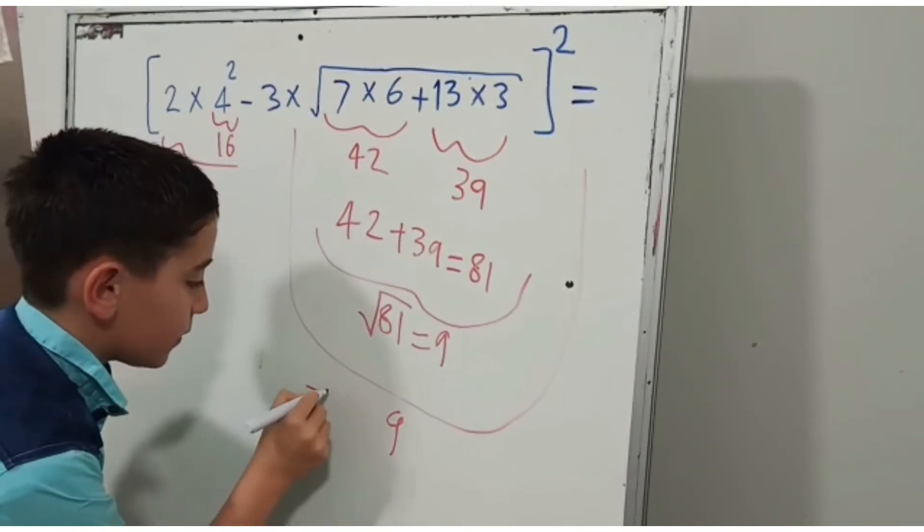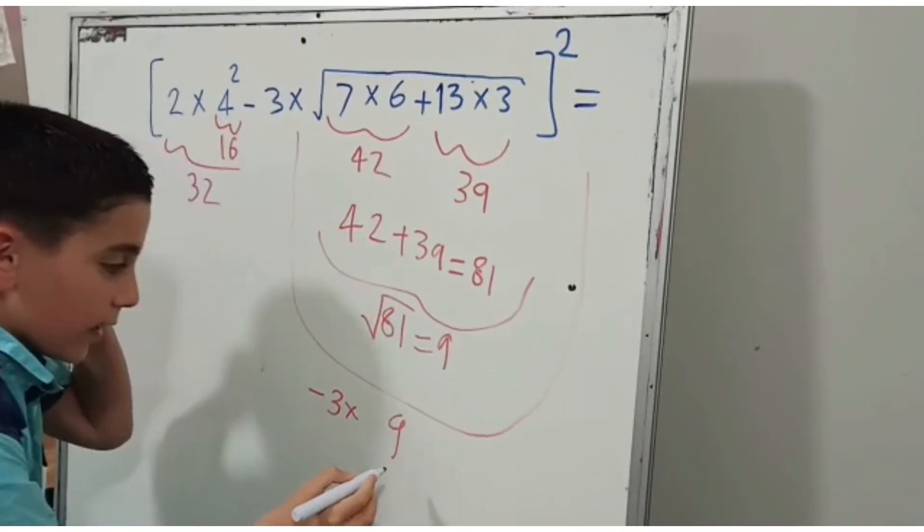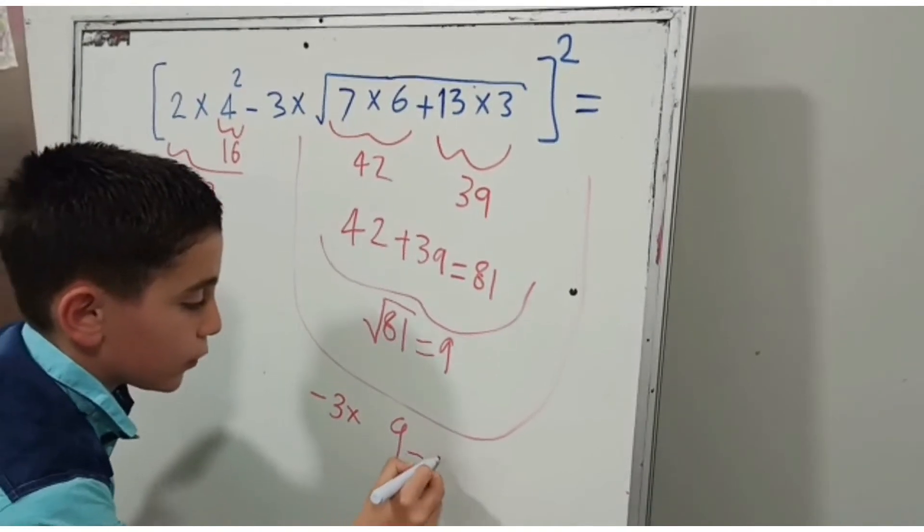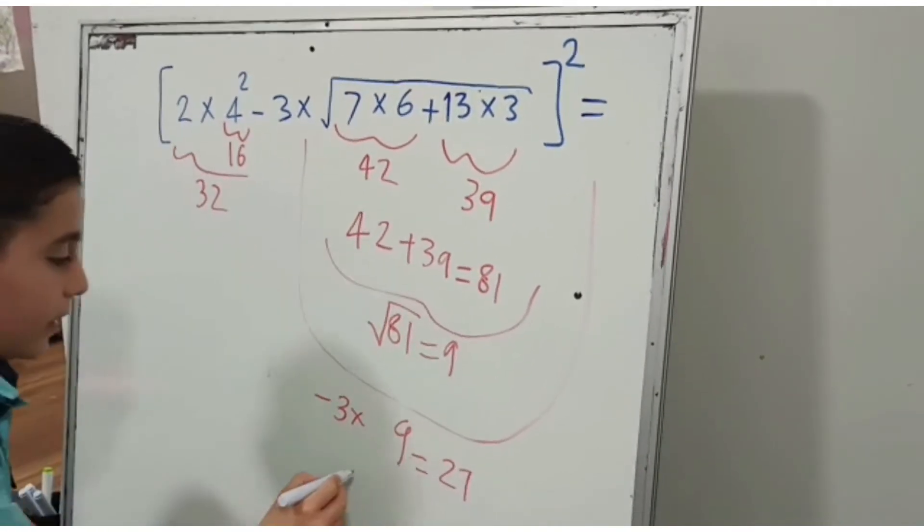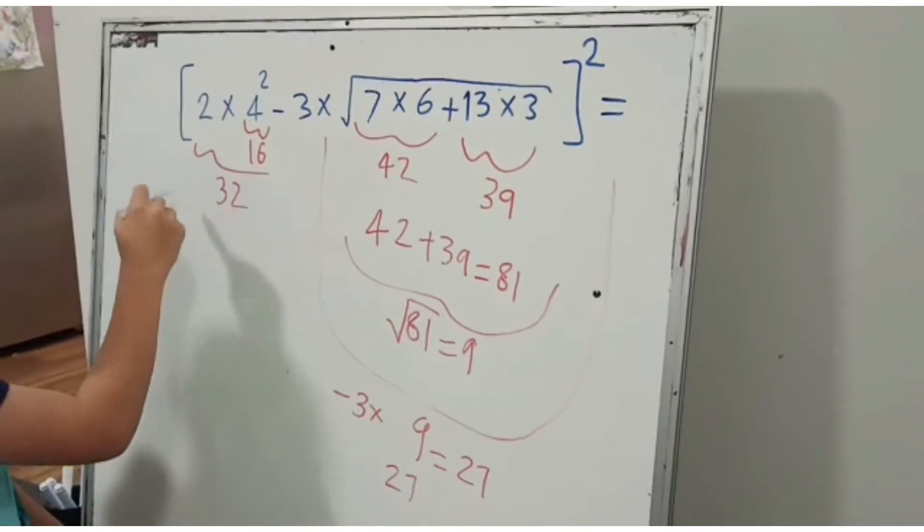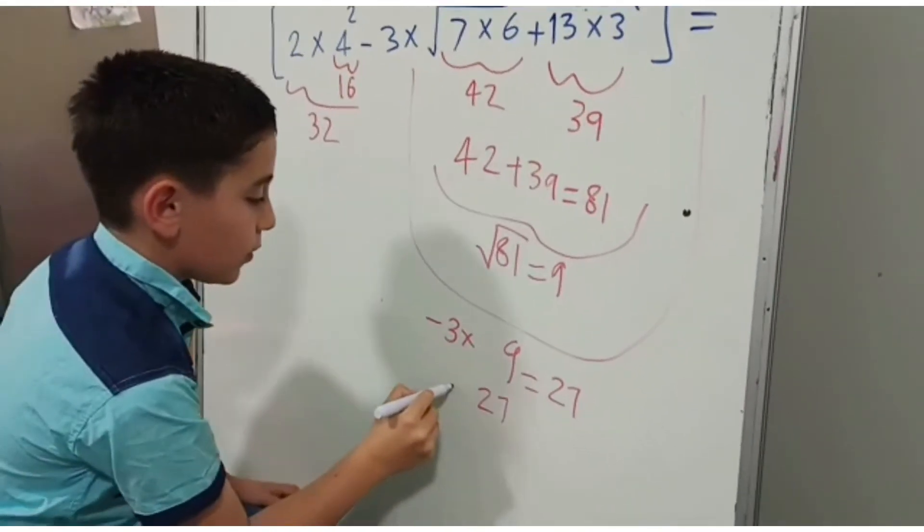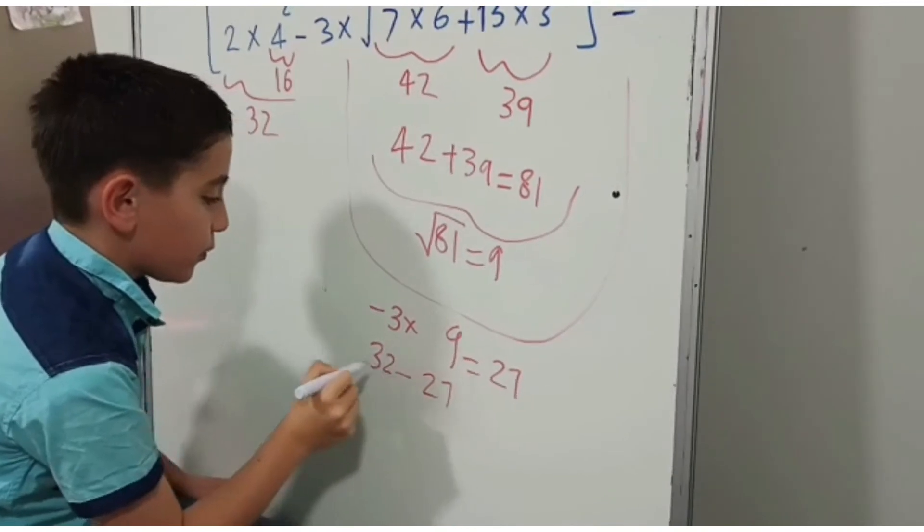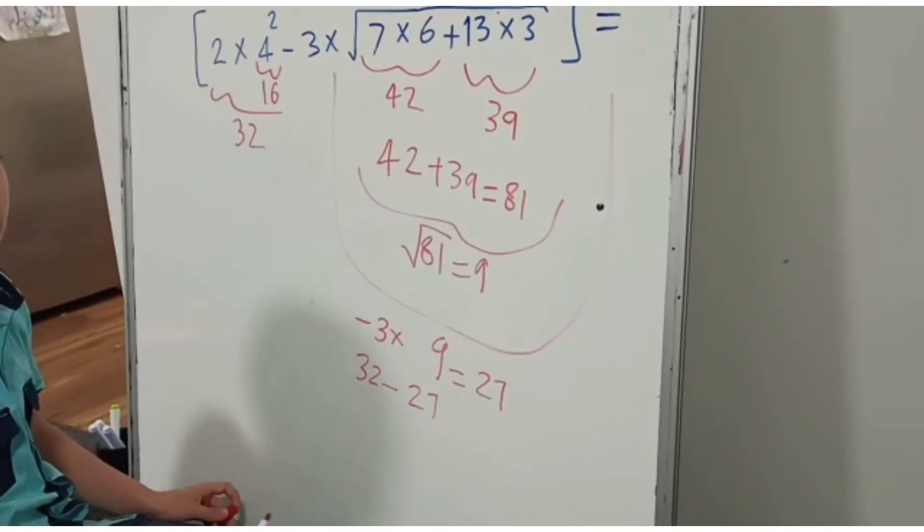We do 32 minus 3 times 9 which equals 27. And then we write the 27 here. We can't forget about this part which is 32. 32 minus 27 equals 5.